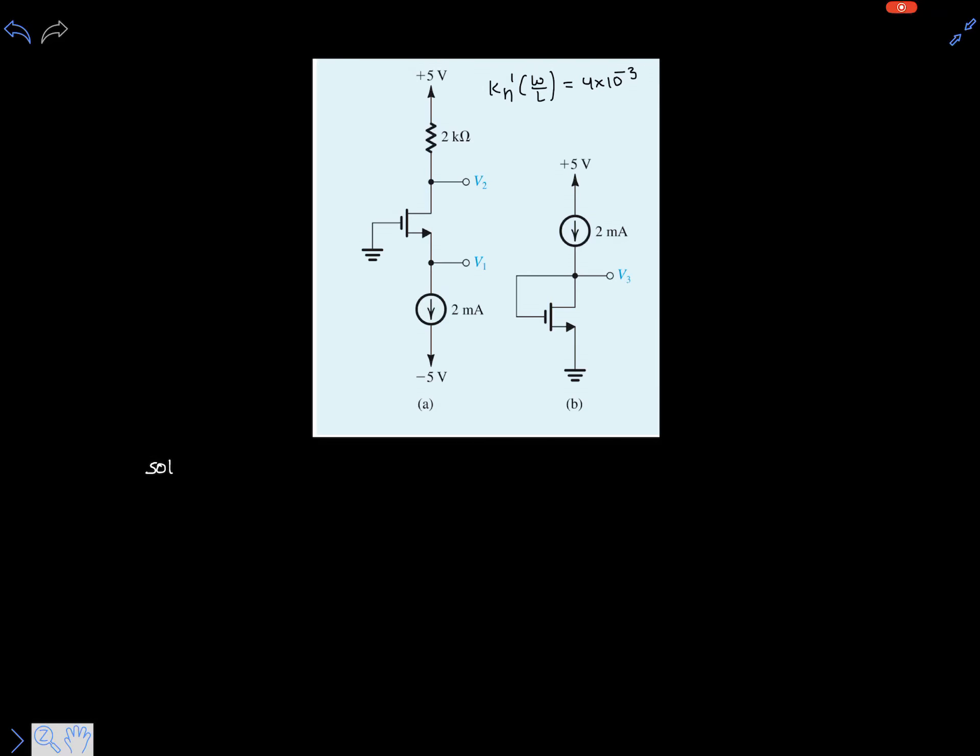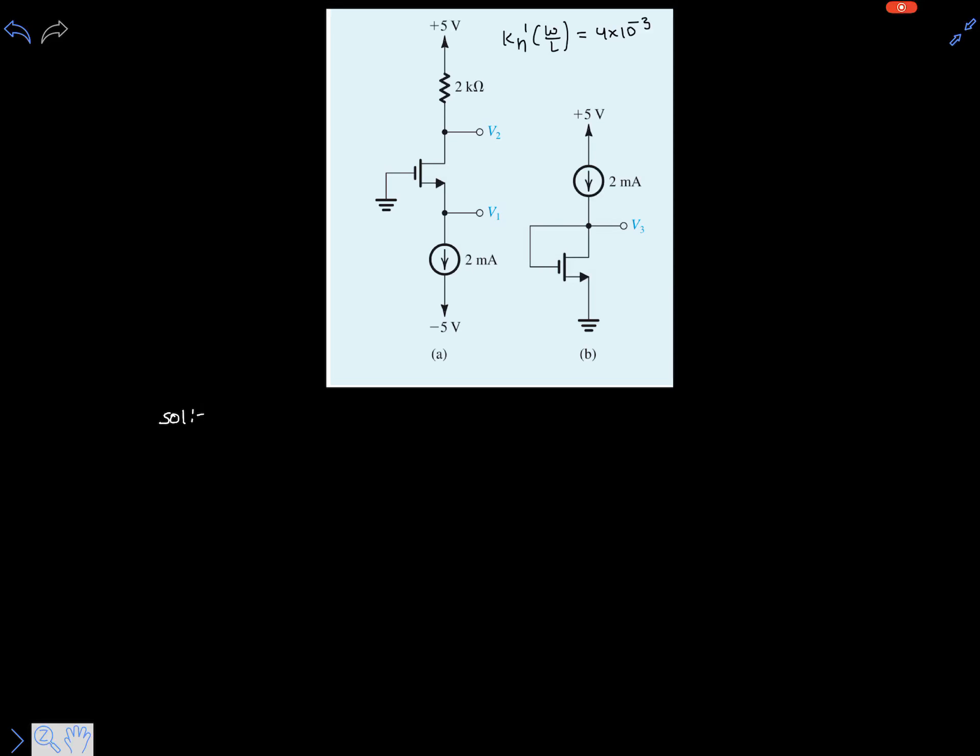The transconductance parameter is given as 4 milliamperes per volt squared.